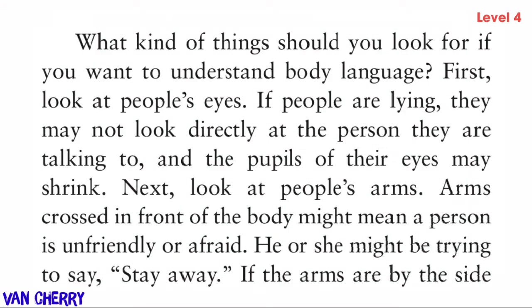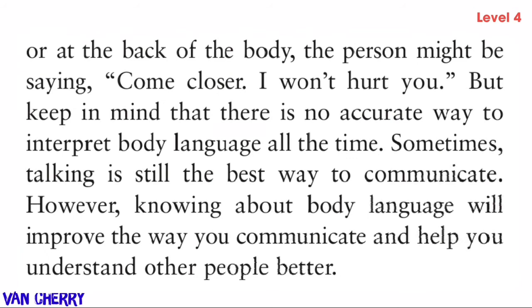What kind of things should you look for? First, look at people's eyes — if people are lying, they may not look directly at the person they are talking to, and the pupils of their eyes may shrink. Next, look at people's arms. Arms crossed in front of the body might mean a person is unfriendly or afraid — they might be saying 'stay away.'